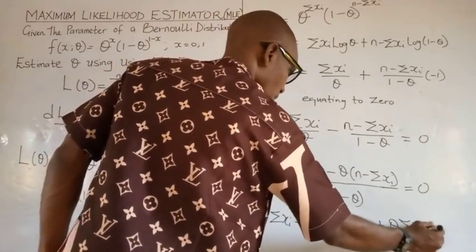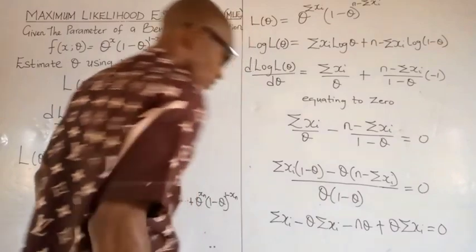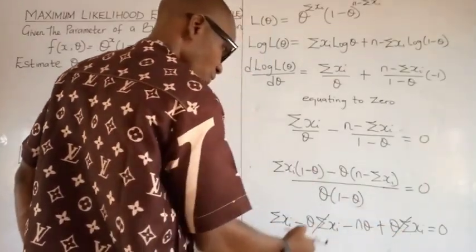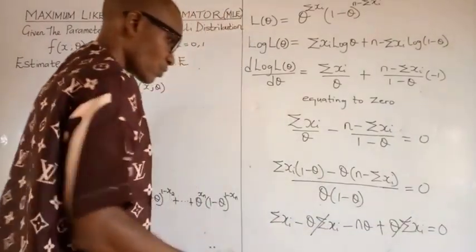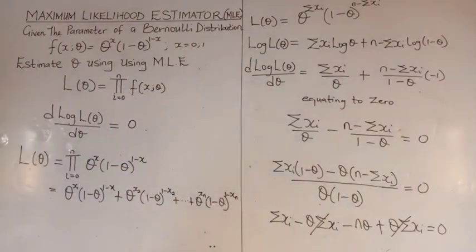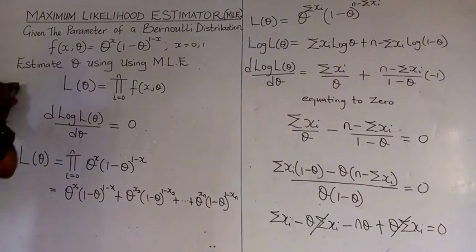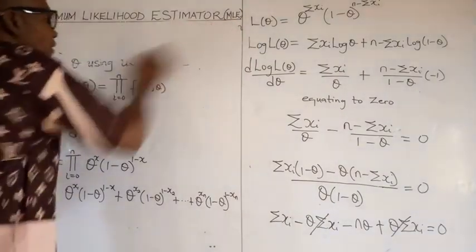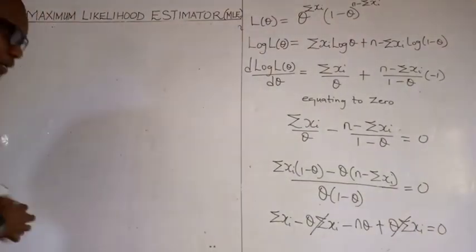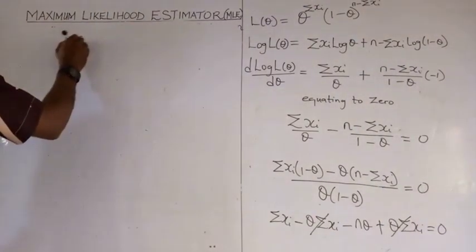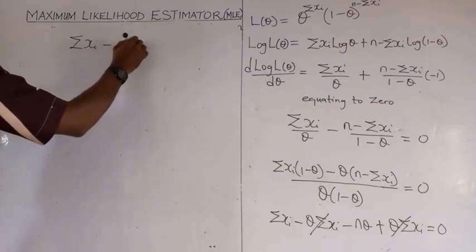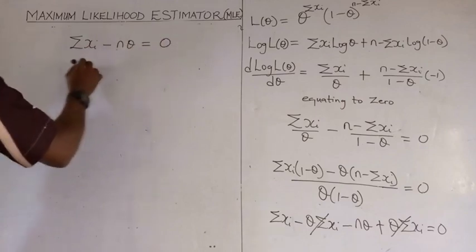Setting the derivative equal to zero, we have summation of xᵢ over theta minus n minus summation of xᵢ over 1 minus theta equals zero. Multiplying through, the terms simplify: minus theta plus theta and similar terms cancel out since minus one plus one equals zero. We are left with summation of xᵢ minus n times theta is equal to zero.